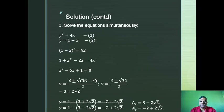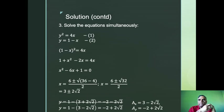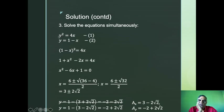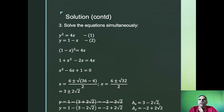To determine point A, we solve the two equations simultaneously — this is pure algebra. Equation 1: y² = 4x. Equation 2: y = 1 − x. Substitute equation 2 into equation 1: (1 − x)² = 4x. Expanding: 1 + x² − 2x = 4x. This gives x² − 6x + 1 = 0, a quadratic equation.